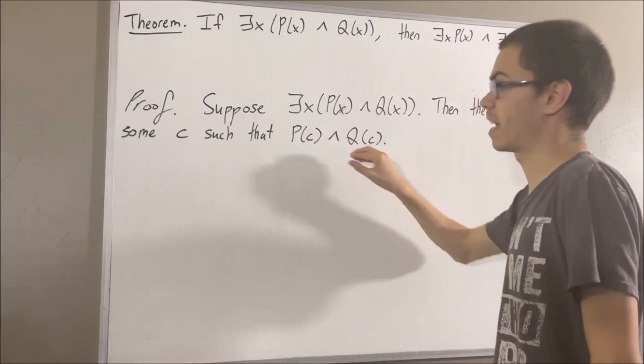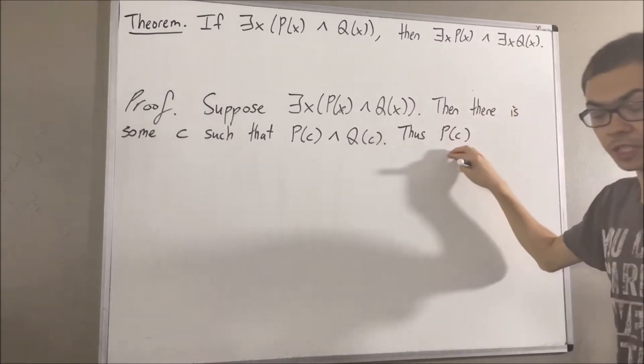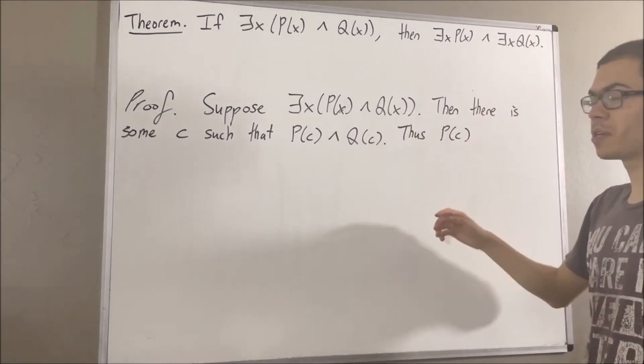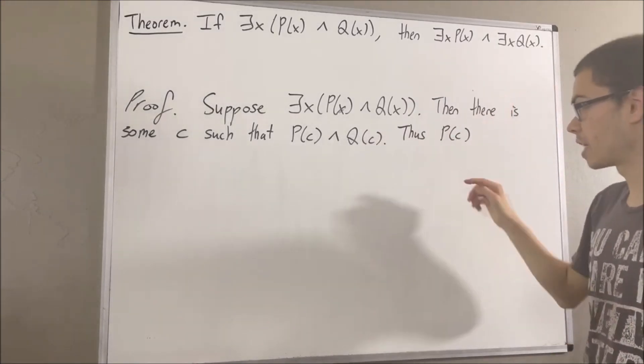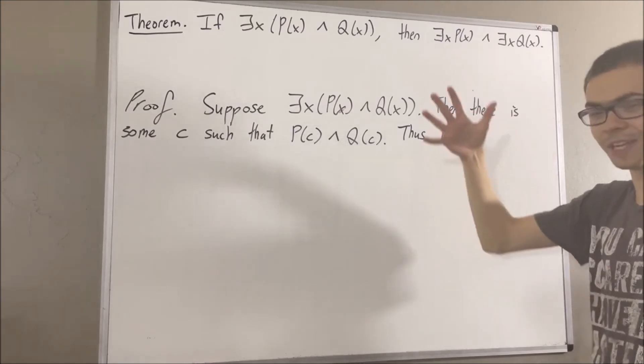From here, we see that p of c is true. And since p of c is true, this means that there is at least one object out there which satisfies statement p. So there exists an x such that p of x.